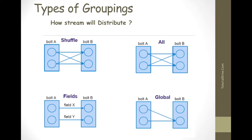And the next one is all grouping. All grouping is a special grouping that does not partition the tuples but sends a single copy of each tuple to all instances of the receiving bolts. This kind of grouping is used to send signals to bolts. For example, if you need to refresh a cache. Another example is if you are doing some kind of filtering on the streams, then you have to pass the filter parameter to all the bolts. This can be achieved by sending those parameters over a stream that is subscribed by all the bolts.